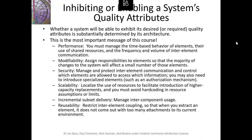The first reason — inhibiting or enabling a system's quality attributes — is a key theme throughout these presentations. A system's ability to meet its desired quality attributes is very often determined by the architecture. If your system requires high performance, you need to pay attention to managing the time-based behavior of elements, their use of shared resources, and their frequency and volume of communications. If modifiability is important, you need to limit the coupling of elements so that most changes only affect a small number of elements — ideally, each change would affect only a single element.